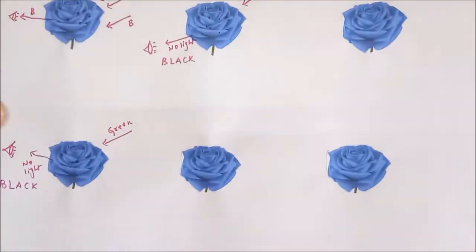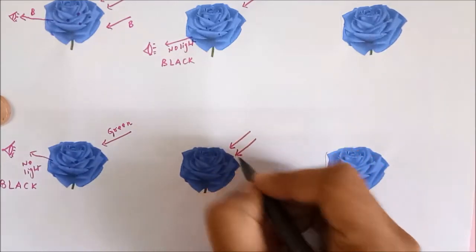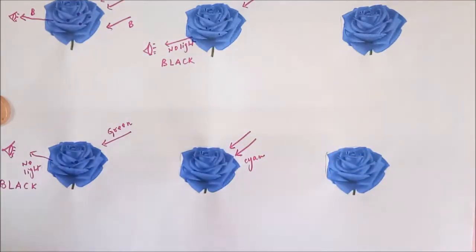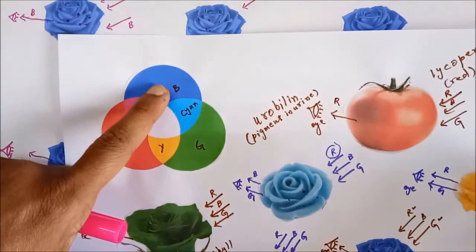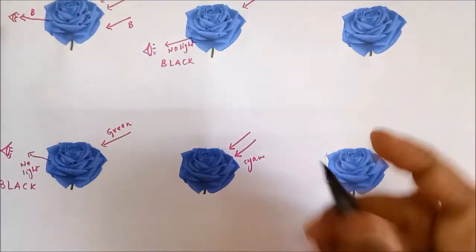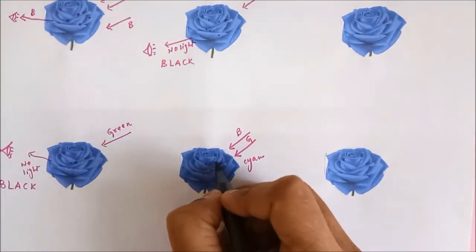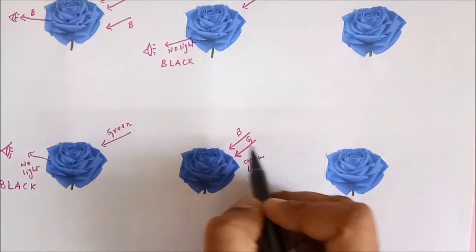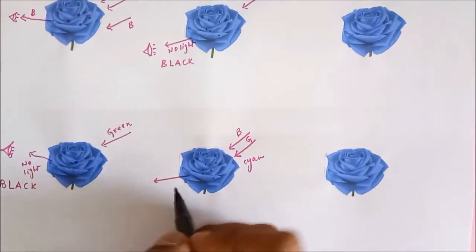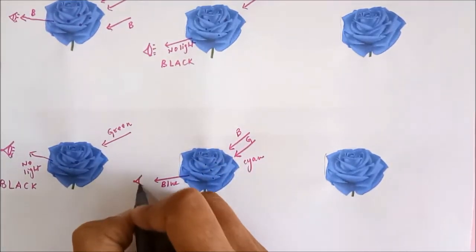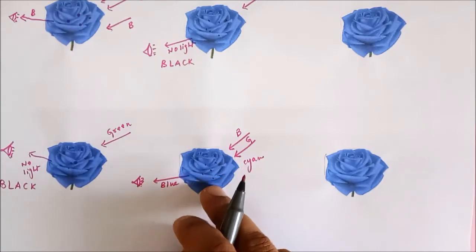These are quite interesting cases when we impart secondary colors. Let us consider cyan — cyan is made up of blue and green. The pigments do not absorb blue color but they do absorb green color. So blue is not absorbed, it gets reflected and finally reaches our eye. In cyan light, our eye sees the rose as blue.